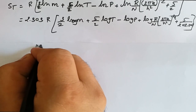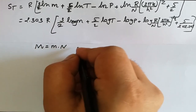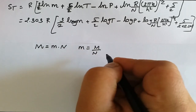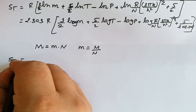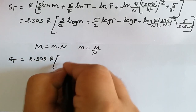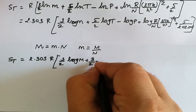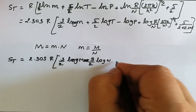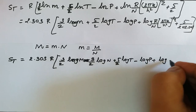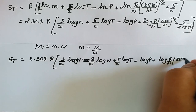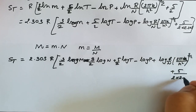The molar mass of any species can be written as mass times Avogadro's number N, so small m = M/N, where M is molar mass and N is Avogadro's number. Substituting, the entropy becomes S_t = 2.303R [(3/2) log M − (3/2) log N + (5/2) log T − log P + log(R/N × (2πk/h²)^(3/2)) + 5/2].